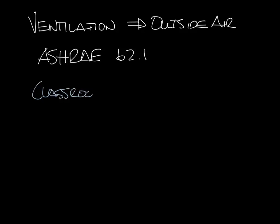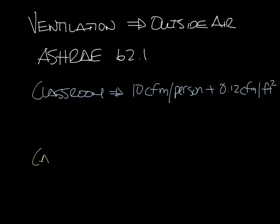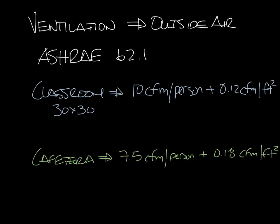For instance, ASHRAE 62.1 says that a classroom needs 10 CFM per person plus 0.12 CFM per square foot, and a cafeteria would need 7.5 CFM per person plus 0.18 CFM per square foot. So if we have a classroom that's 30 by 30 with 30 kids in it, that would be 30 times 30 equals 900 square feet times 0.12 plus 30 kids times 10 CFM is 300, and that gives you 408 CFM of fresh air.